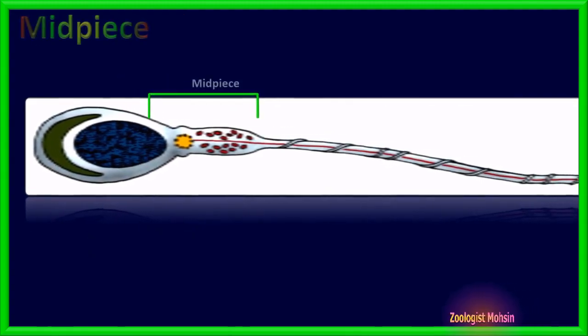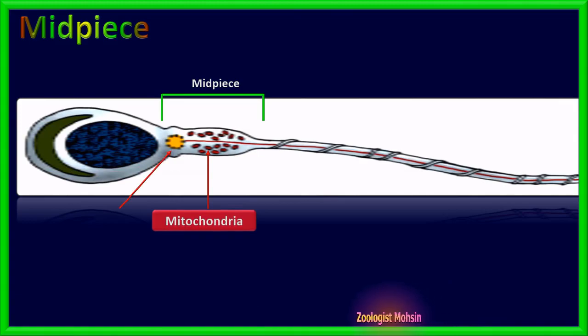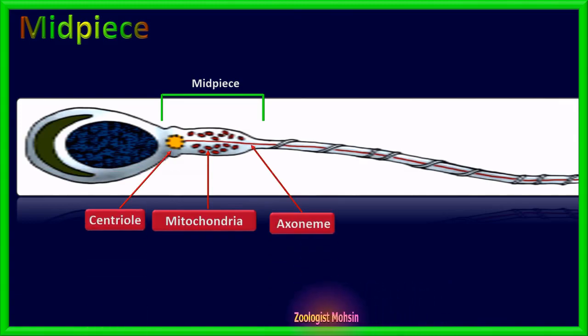The second portion of sperm behind the head is the midpiece. Midpiece contains a centriole which is continuous in the axoneme right through the tail up to the end, and mitochondrial sheets are present around it as a power center. The third portion of sperm is the tail.